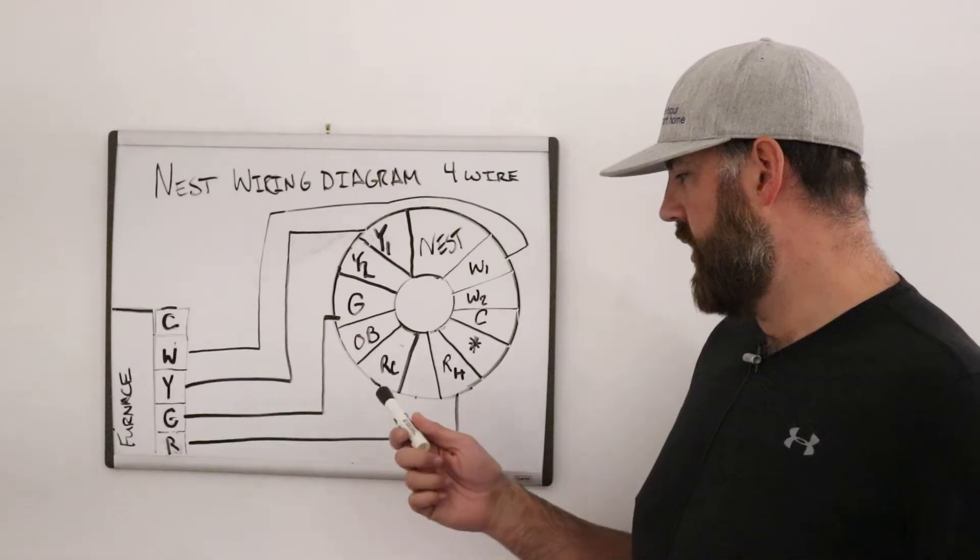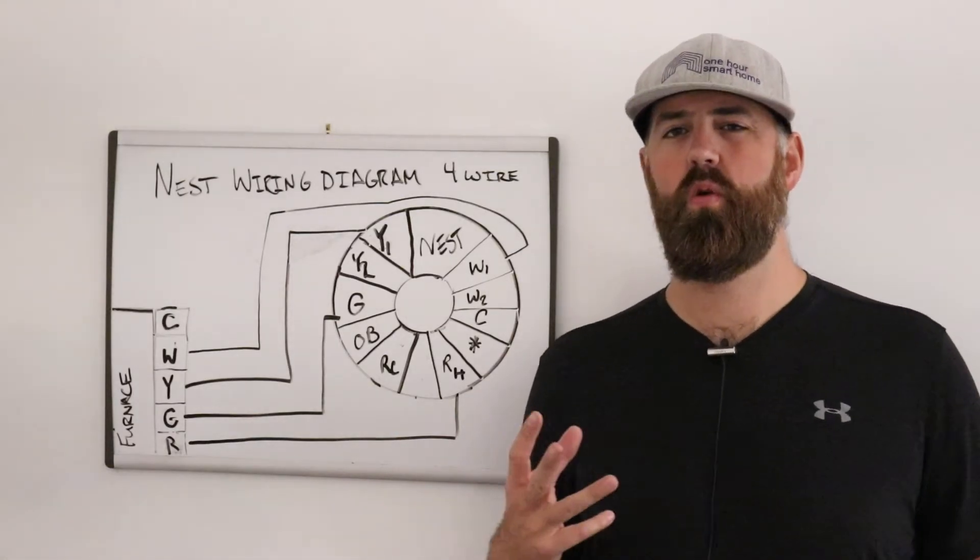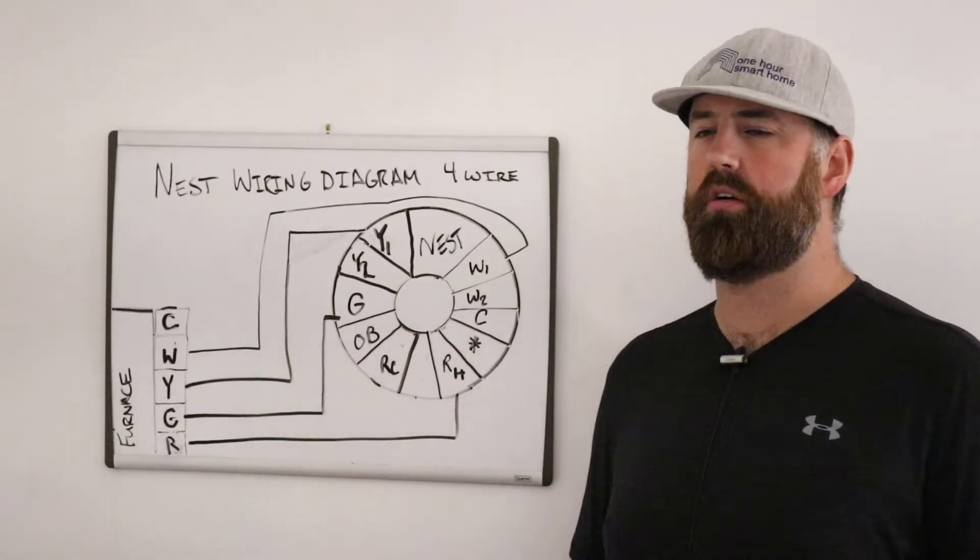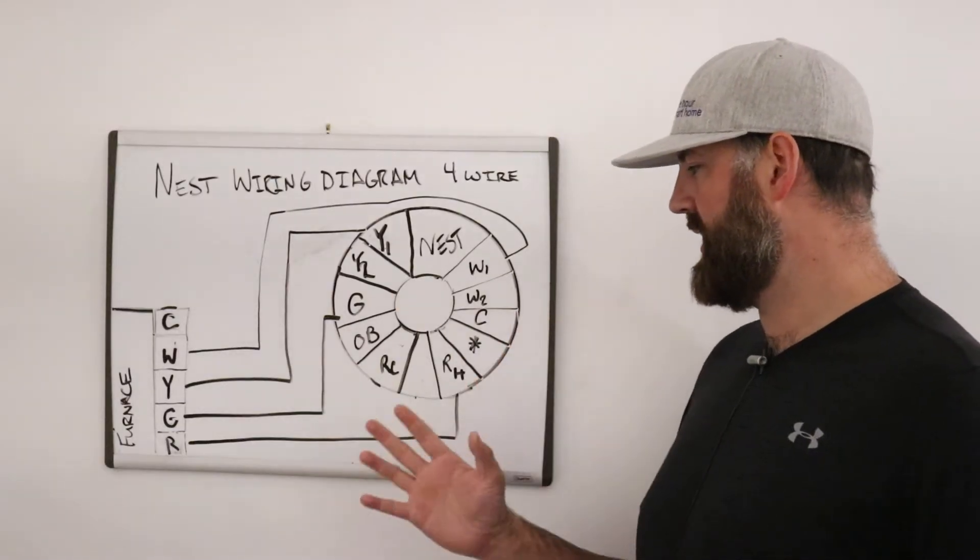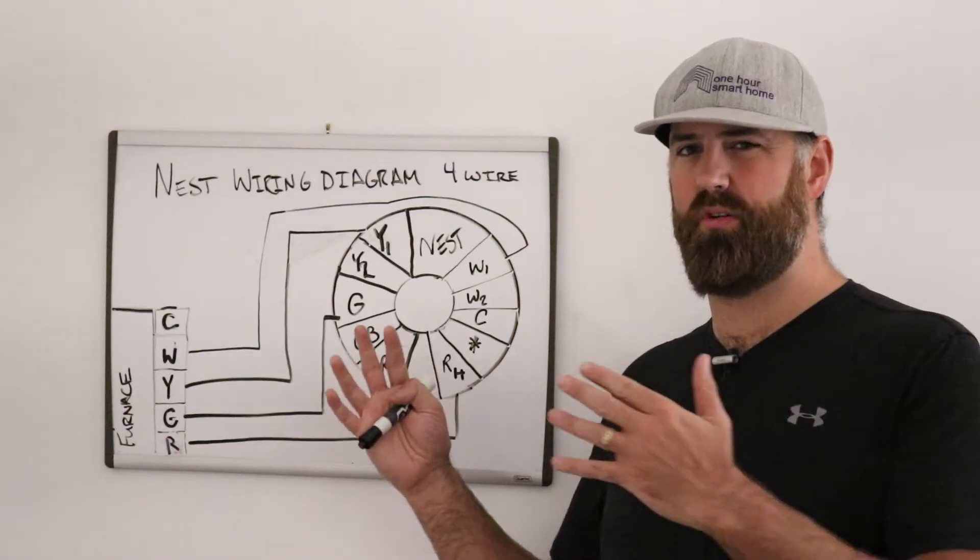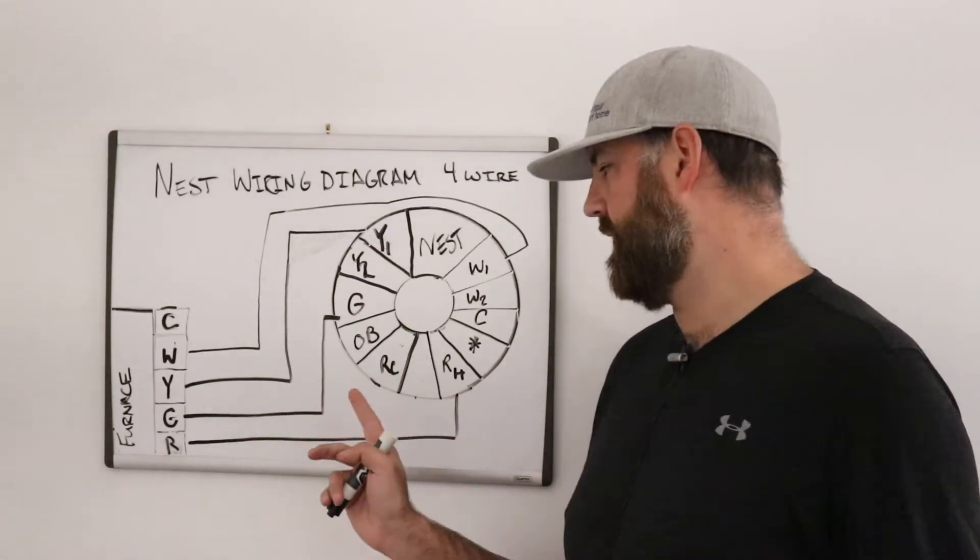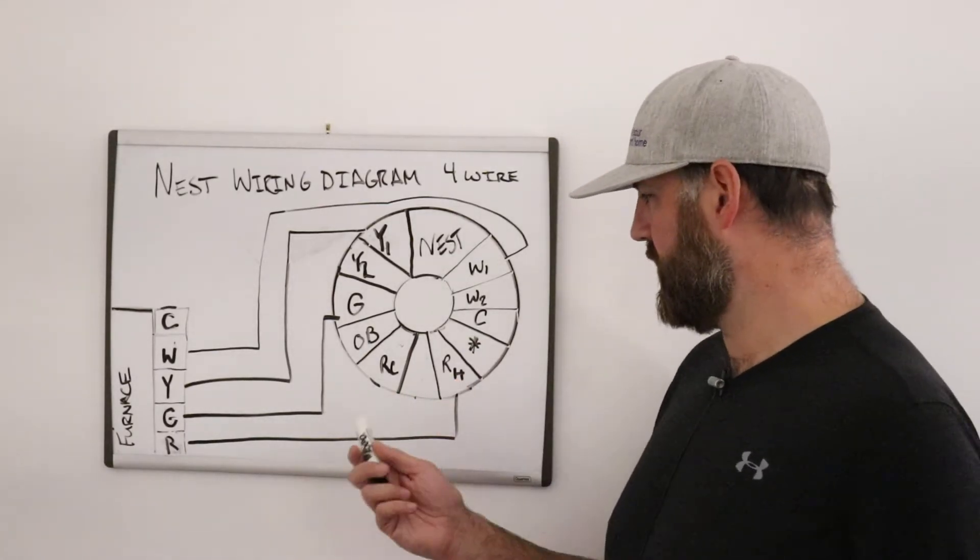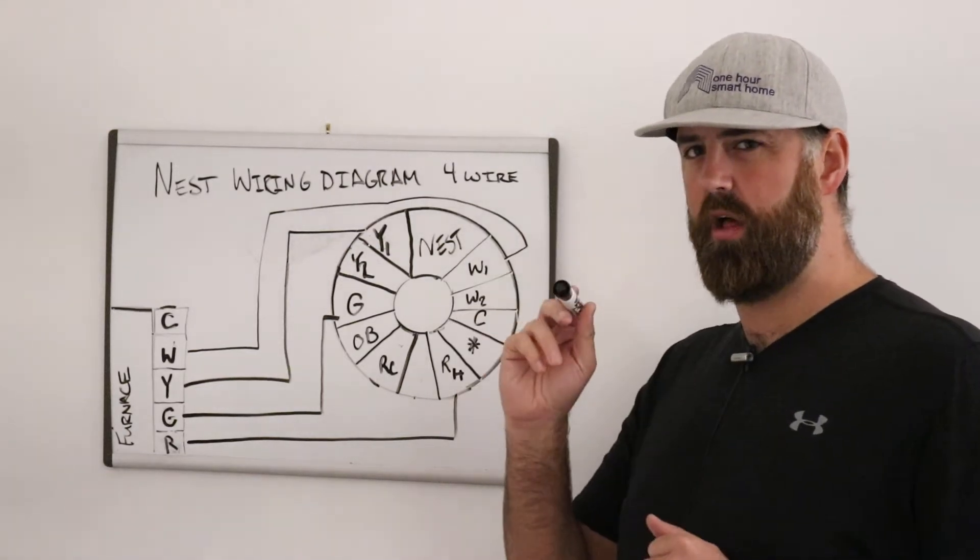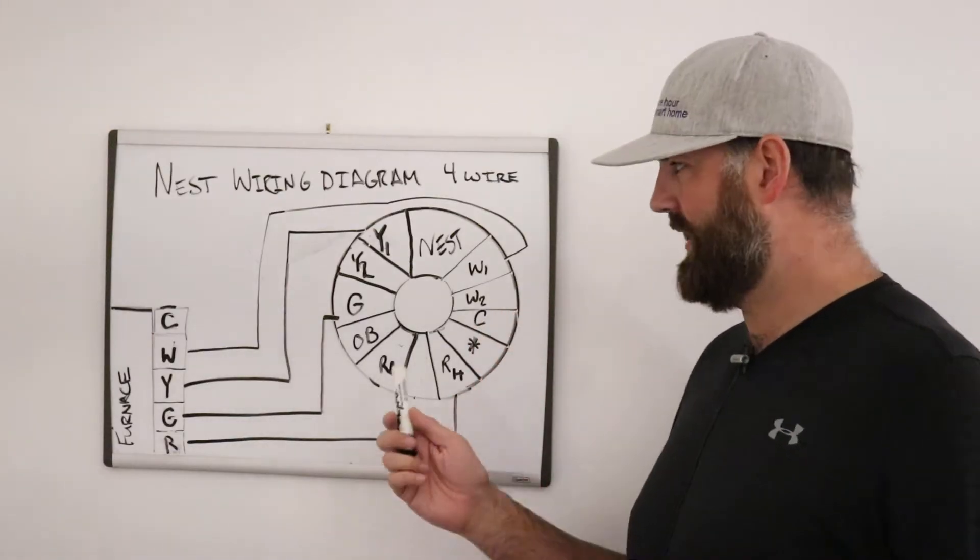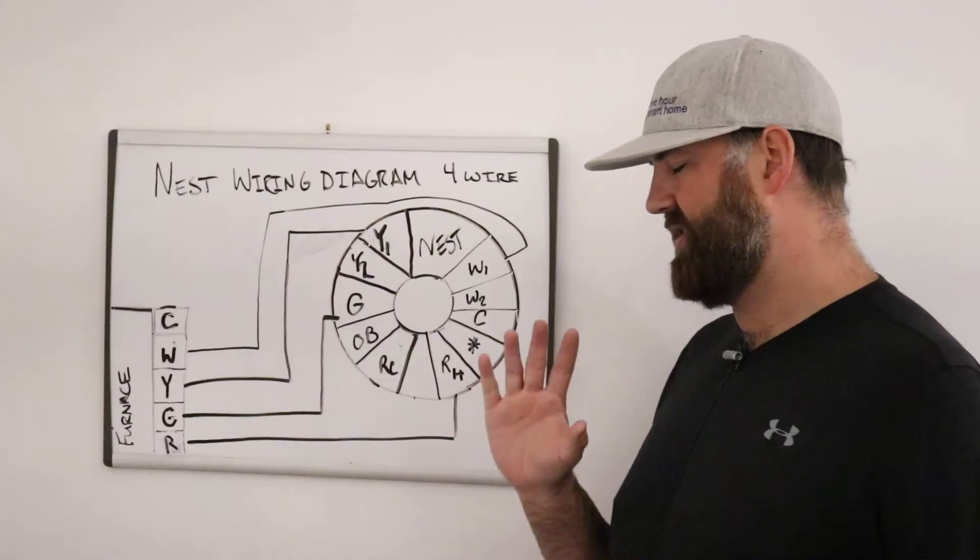After OB, we have what's called the RC wire or the RC terminal. The RC terminal is used for heating or power from a cooling system. So, if you have dual fuel systems, which you wouldn't have with a four wire setup typically, this RC terminal would be used to provide power from the cooling system. Now, RC and RH in a four wire nest system are typically basically the same thing. They're just inputs for power. So, you can have the R terminal power going to either RH or RC and it doesn't matter. It's not going to hurt anything if you put the R wire in RH or RC.